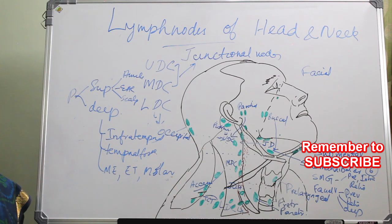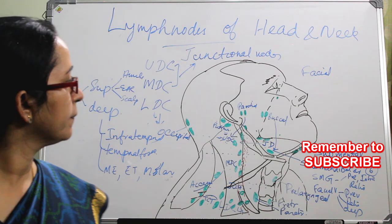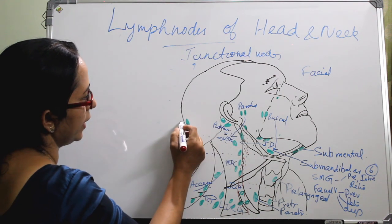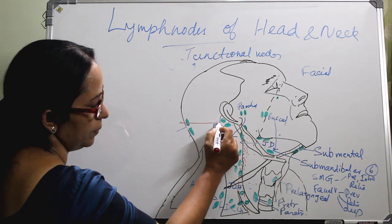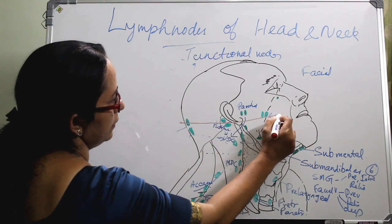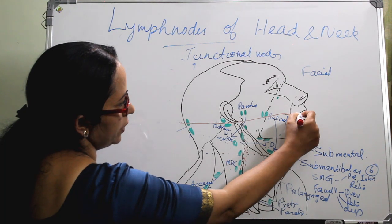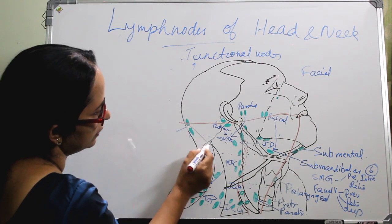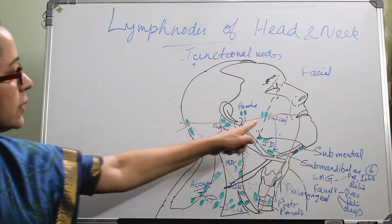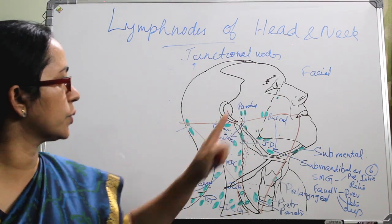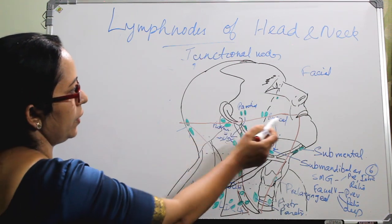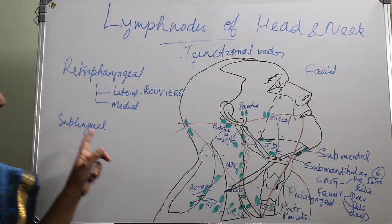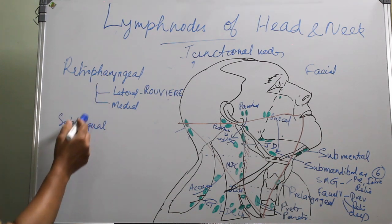These are the lymph nodes of the head and neck area that are clinically palpable, and they form an inverted triangle. Starting from the occipital, connecting through the posterior, buccal, submandibular, pre-laryngeal, para-laryngeal, and then along the jugular chain. This forms an inverted triangle for the custodial group of lymph nodes: occipital, posterior, parotid, and buccal, then pre-laryngeal, pre-tracheal, para-tracheal, and the jugular chain.